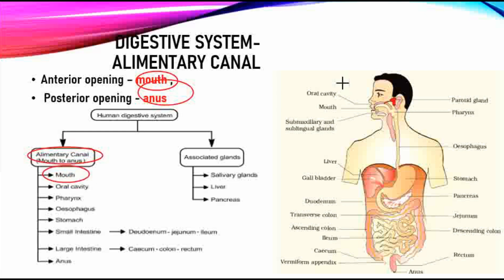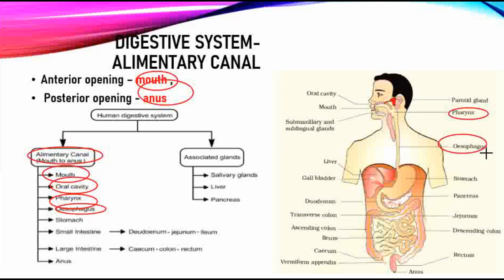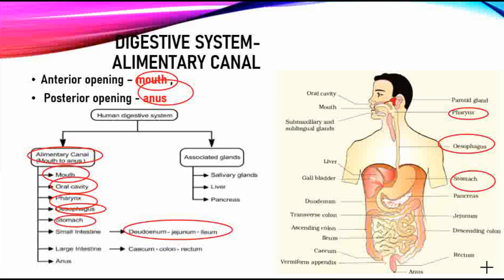When we consume food, it goes to the oral cavity, where our teeth are present. Then we have the pharynx, followed by the esophagus — a long tube. Then we have the stomach. After the stomach comes the small intestine, which has three parts: duodenum, jejunum, and ileum. Then we have the large intestine, consisting of the cecum, colon, and rectum. Finally, the posterior opening is the anus.